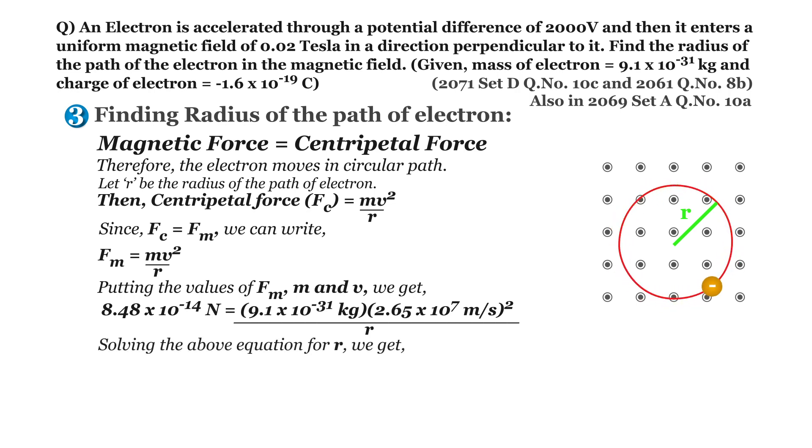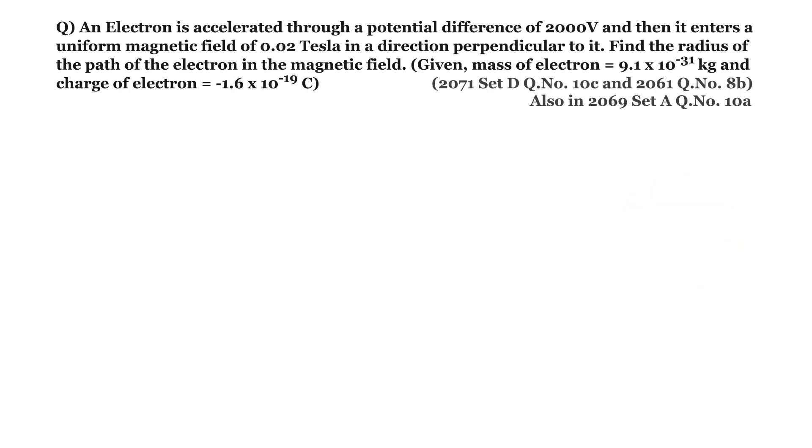Solving the above equation for R, we get R equals 7.53 into 10 to the power minus 3 meter, which equals 7.53 mm. Hence, the radius of the path of the electron in the given magnetic field is 7.53 mm. If you want to solve this problem without calculating the value of magnetic force, then use this formula R equals m v divided by BE.